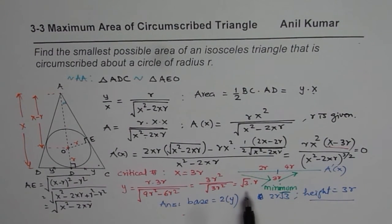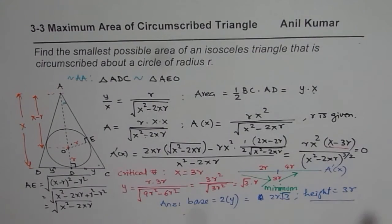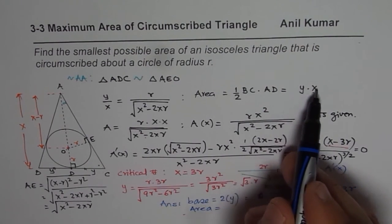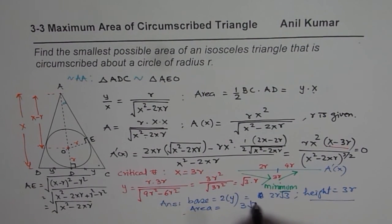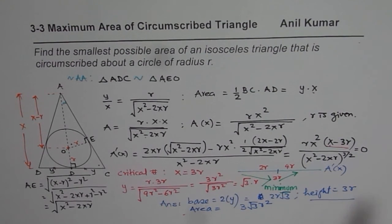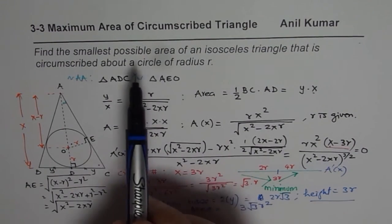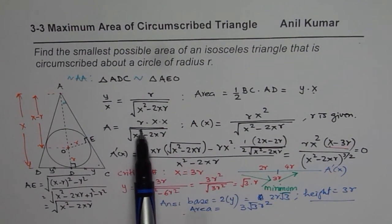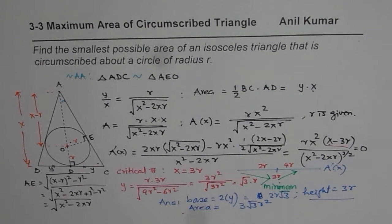With base 2R√3 and height 3R, the area is half base times height, which equals Y times X, giving us 3√3 R². That is the smallest possible area of the isosceles triangle circumscribed about a circle of radius R. I hope that really helps. Thank you and all the best.